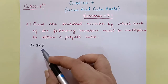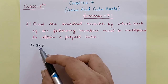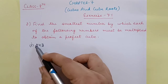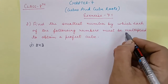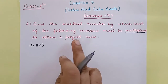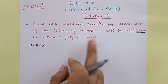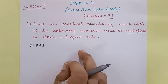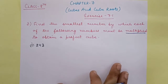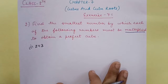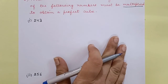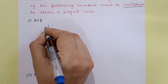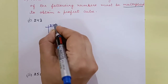Now students, the first part given is 243. This type of question is similar to what we had in squares and square roots. Now what can we do? We will do the prime factorization of 243. Let's see the prime factors of 243.